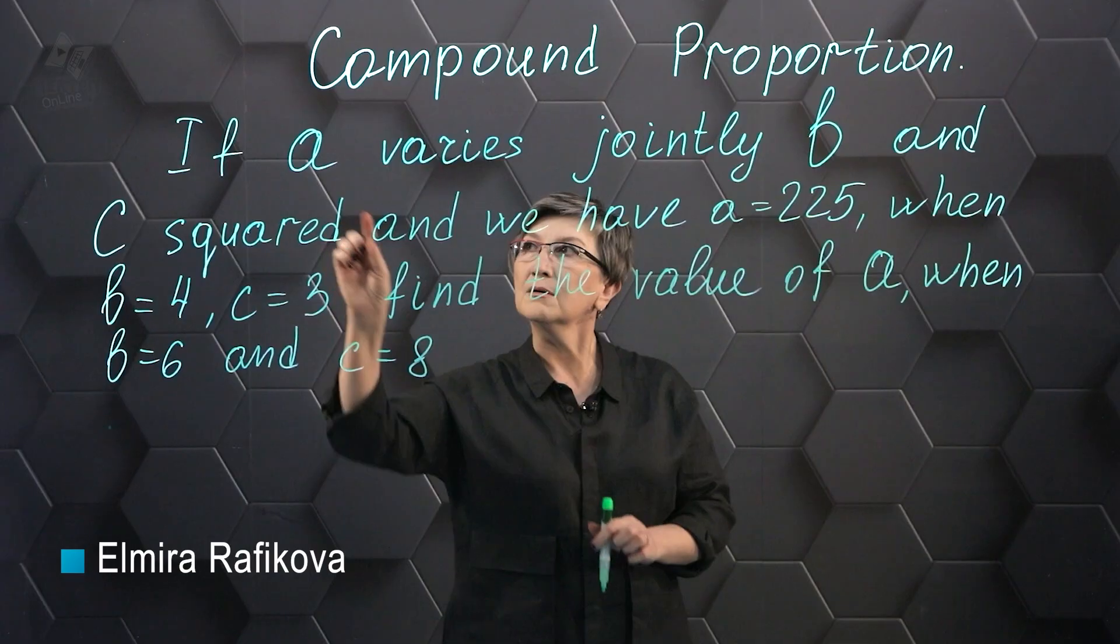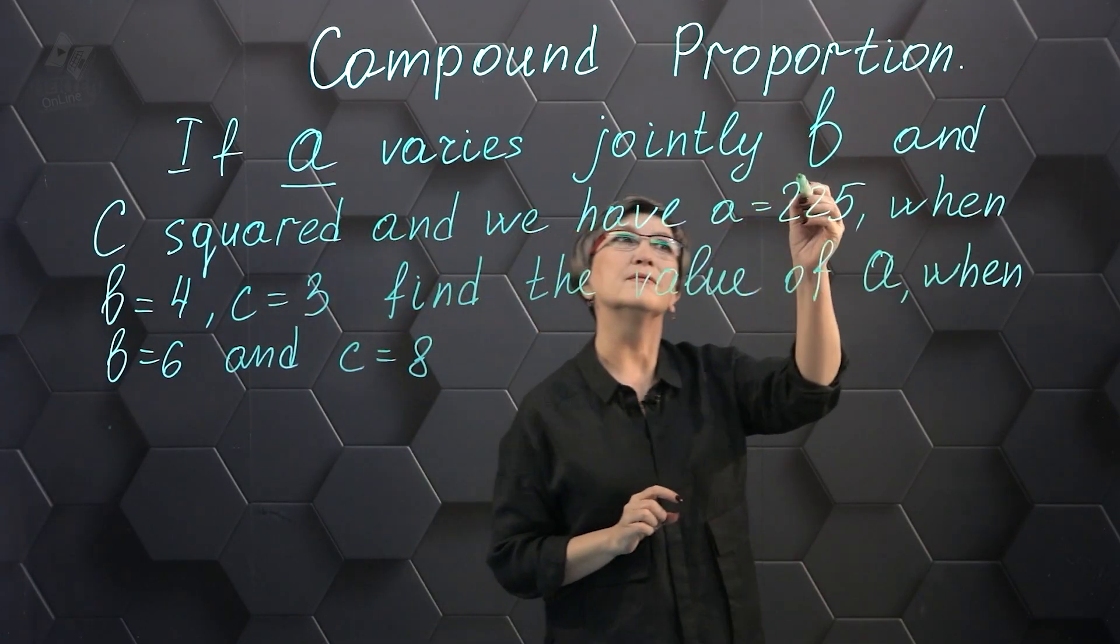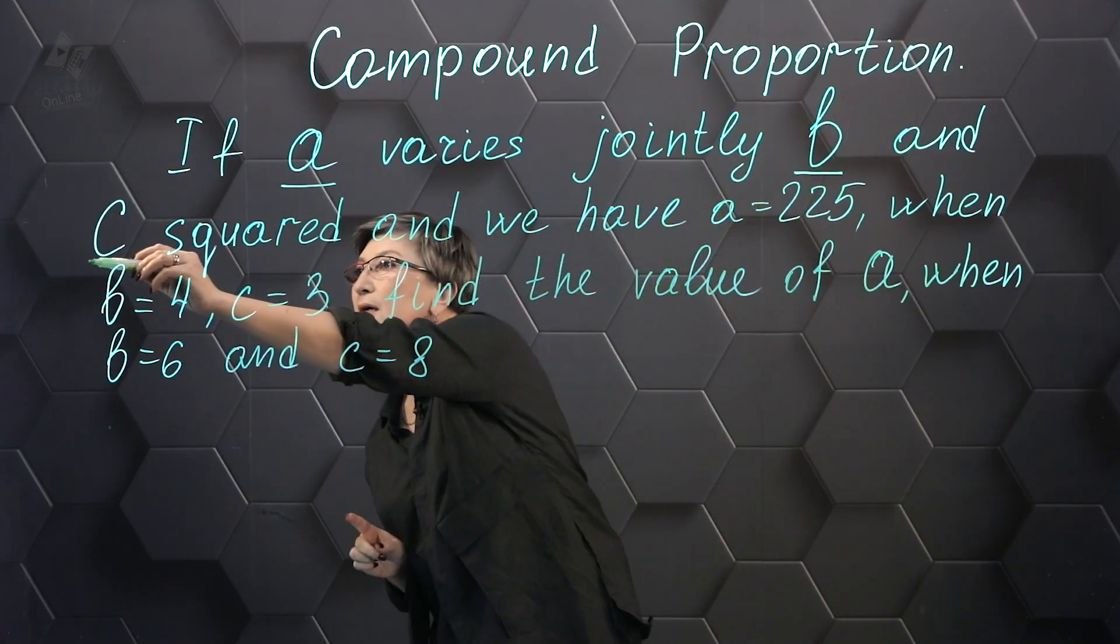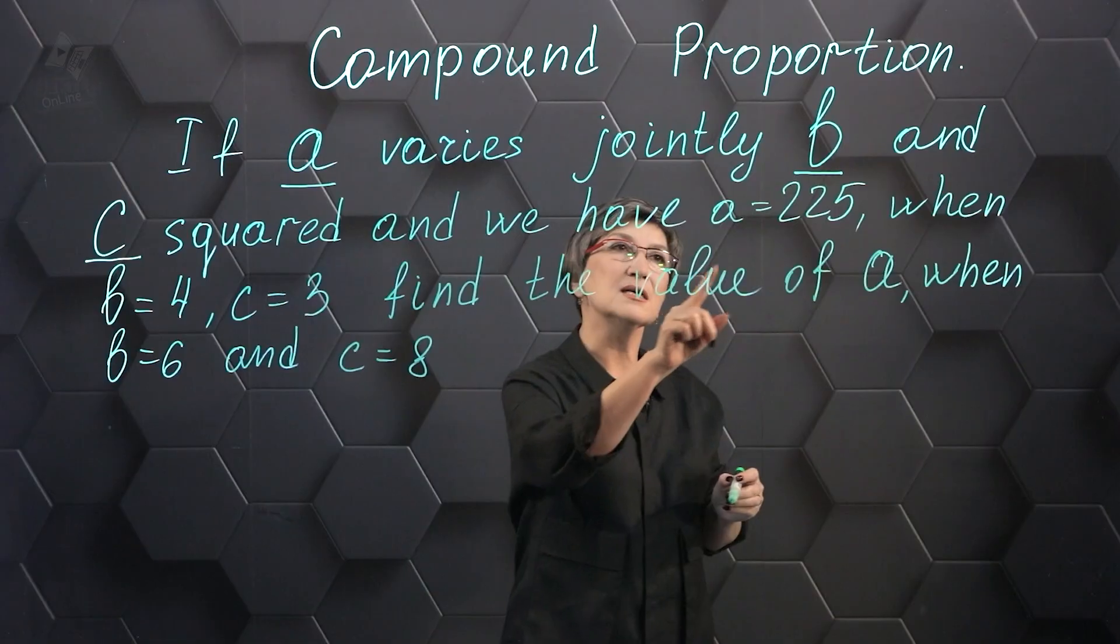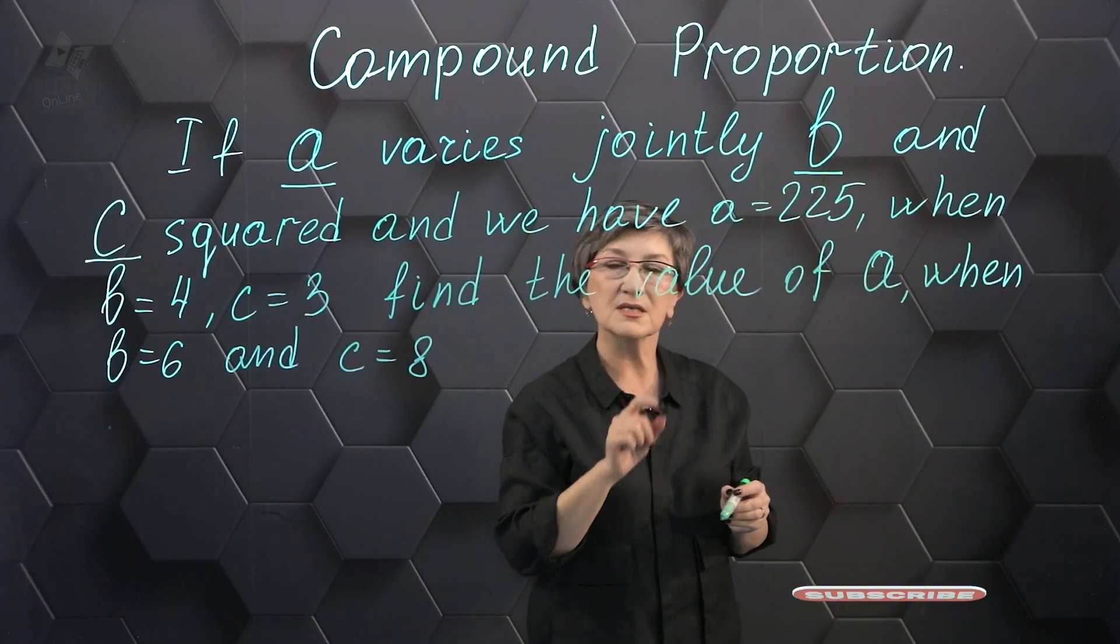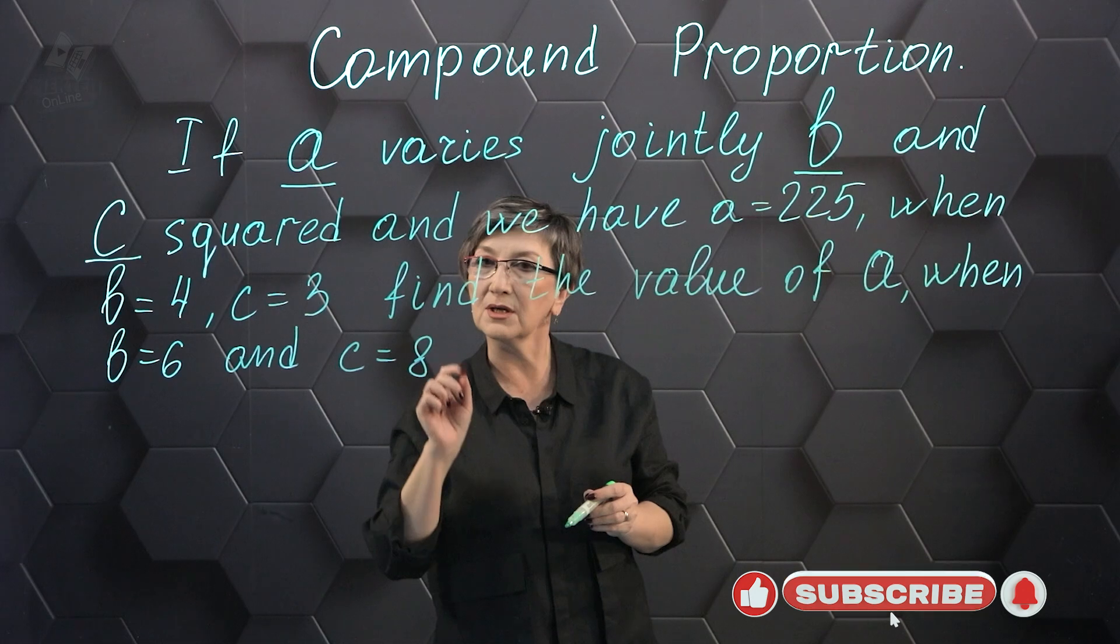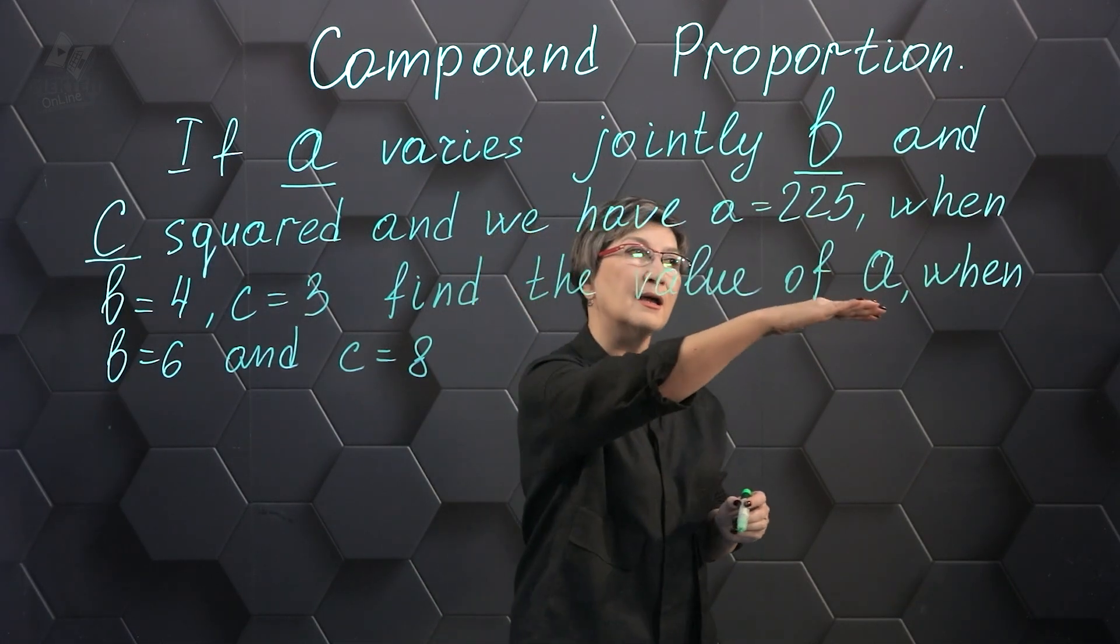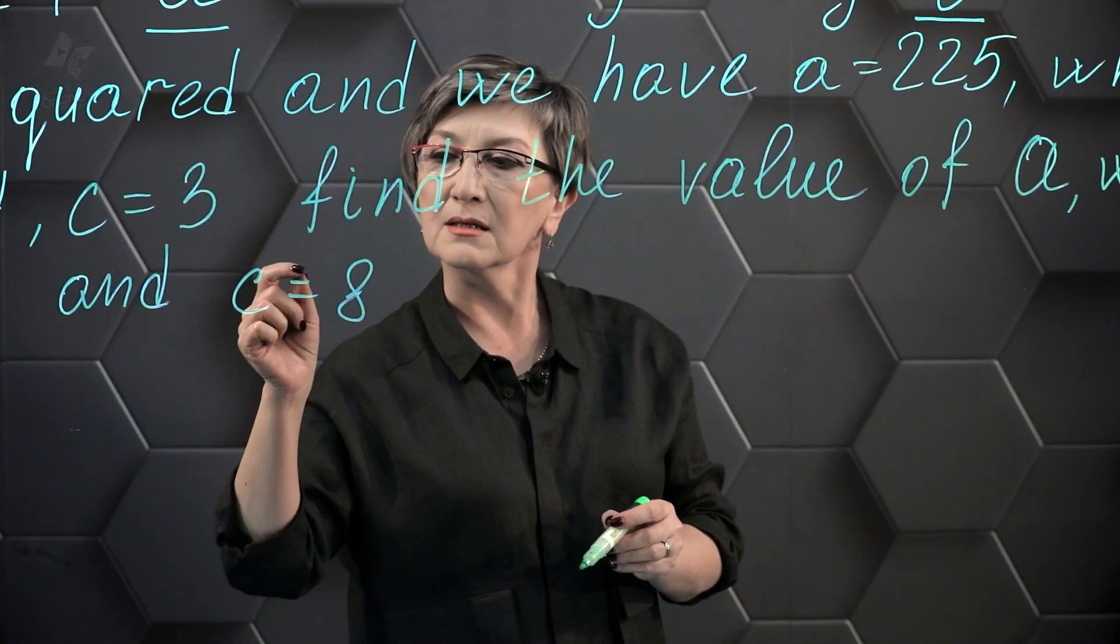There are three quantities. If a value depends on the value of b and the square of c, and if a is 225 when b is 4 and c is 3, we need to find the value of a when b is 6 and c is 8.